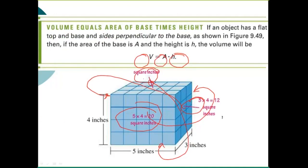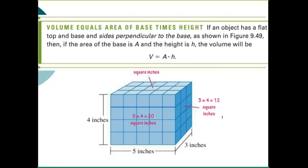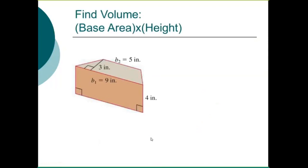Volume equals the base area times the height. This concept applies to most shapes: figure out the base area and multiply by the height to get volume. For this box, the base is 5 times 3, which is 15 cubes. Multiplying by the height tells you how many stacks of 15 you have, giving the total number of cubes.